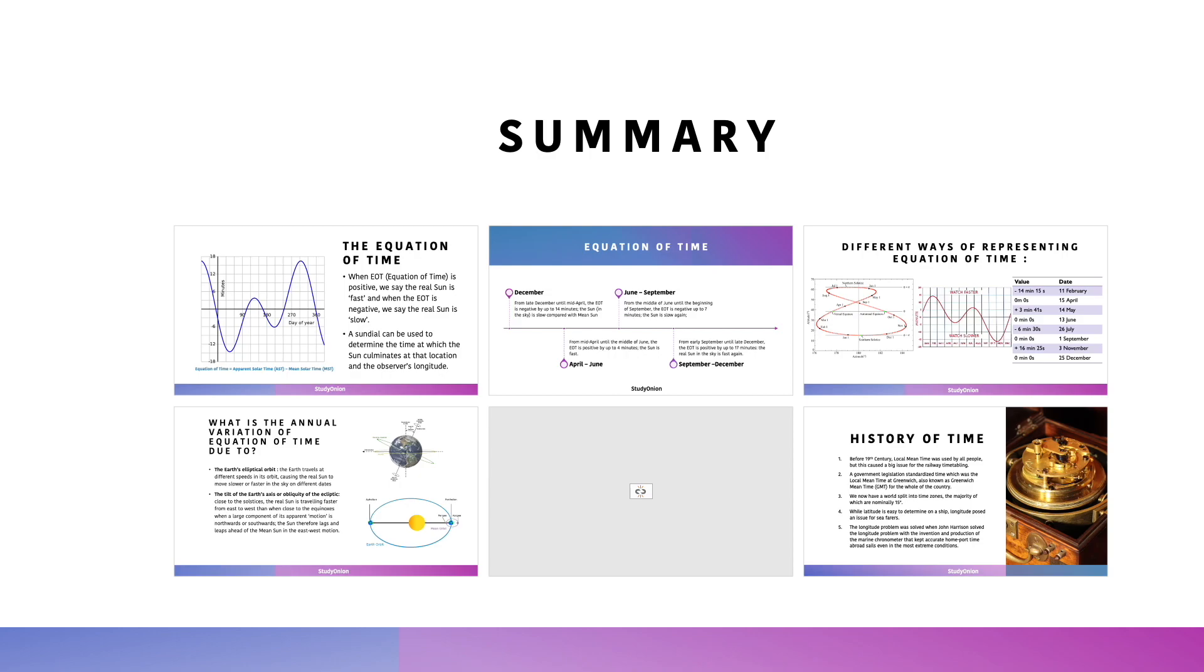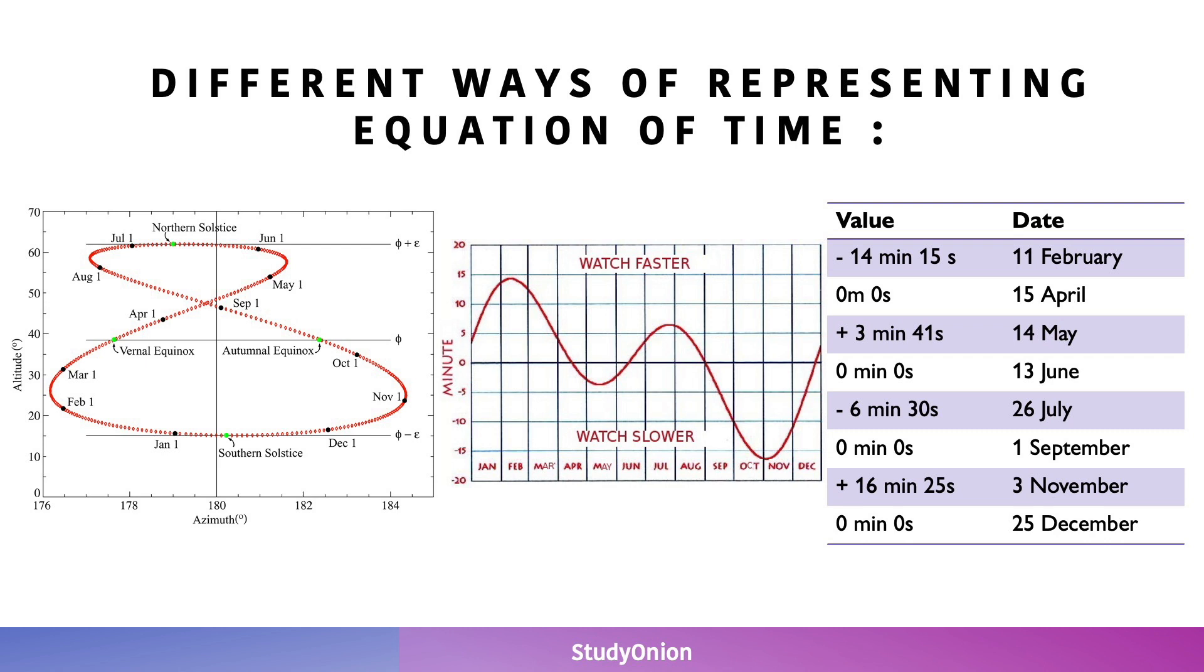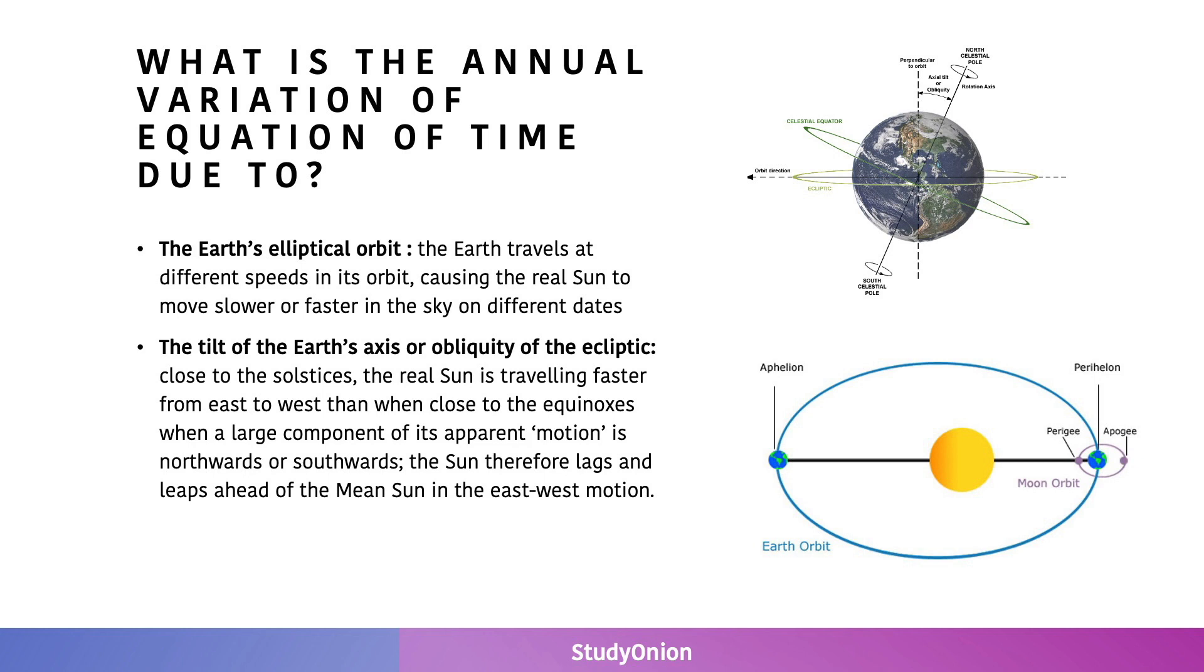To summarise. When the EOT is positive, we say that the real sun is fast. And when the EOT is negative, we say that the real sun is slow. A sundial can be used to determine the time at which the sun culminates at that location at the observer's longitude. The equation of time is equal to the apparent solar time minus the mean solar time. There are three ways of representing the equation of time: a table, a graph, and an analemma. The annual variation for the equation of time is due to two reasons: the Earth's elliptical orbit, and the obliquity of the ecliptic or the tilt of the Earth's axis.